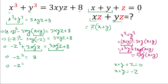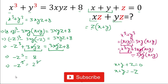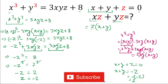We can write −z³ = 8 = 2³, so −z = 2, meaning z = −2. Then x + y = −z = −(−2) = 2.